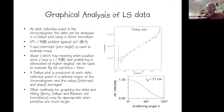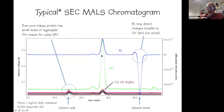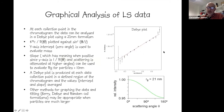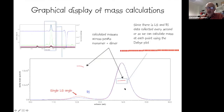Because the chromatogram collects data at perhaps one-second intervals, there are a huge number of points within an eluting peak, and the Debye analysis can be performed at every single point. This yields a mass calculation across a selected region of the chromatogram, so that every individual time point gives the mass of the particles eluting at that moment.